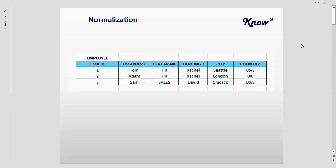We have this table called employee, and the various data elements in this table are the employee ID, the employee name, department name, department manager, city, and country.